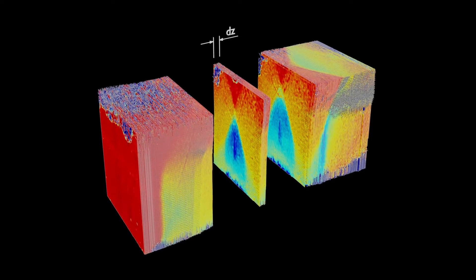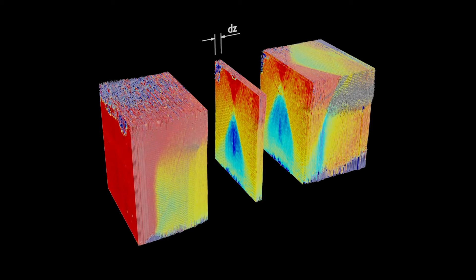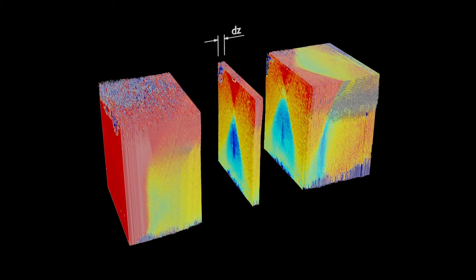We use a spatial averaging window that is small compared to the features we want to resolve in our flow but large enough to include enough instantaneous snapshots such that it is representative of the true average.